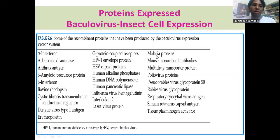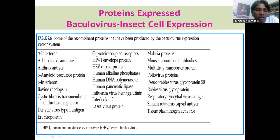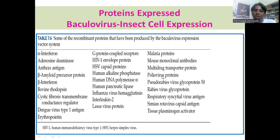Many proteins have been expressed using the baculovirus system, most of them with therapeutic uses: alpha interferon, beta interferon, dengue virus type one antigen, erythropoietin, G protein-coupled receptors, malaria proteins, monoclonal antibodies, and poliovirus proteins, among many others.